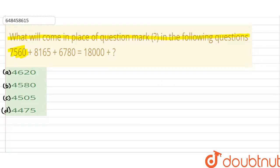And the question is, 7560 plus 8165 plus 6780 is equal to 18000 plus question mark. And the options are 4620, second is 4580, third is 4505 and last option is 4475.